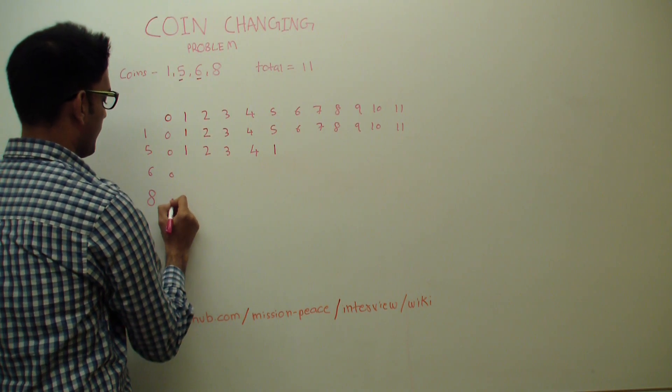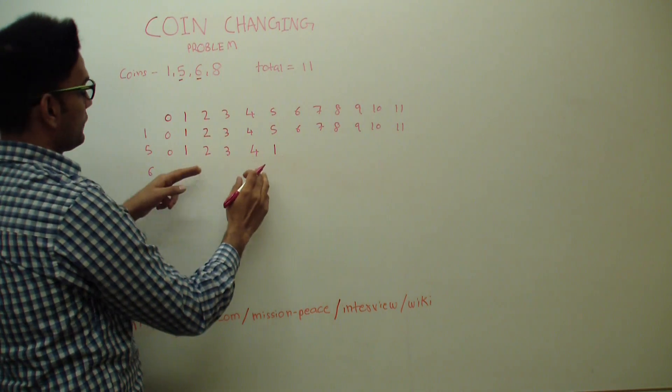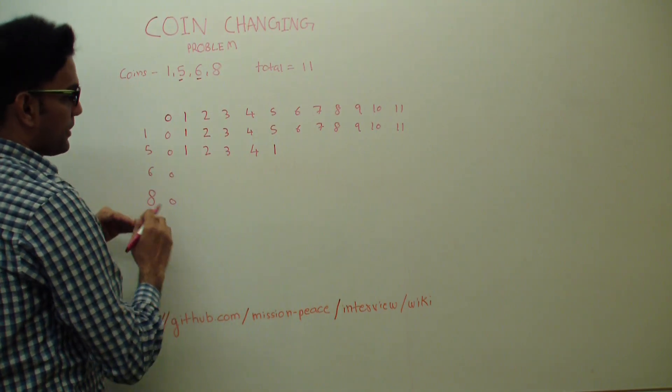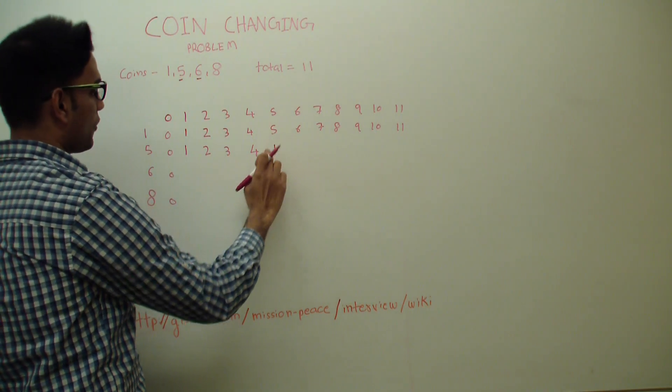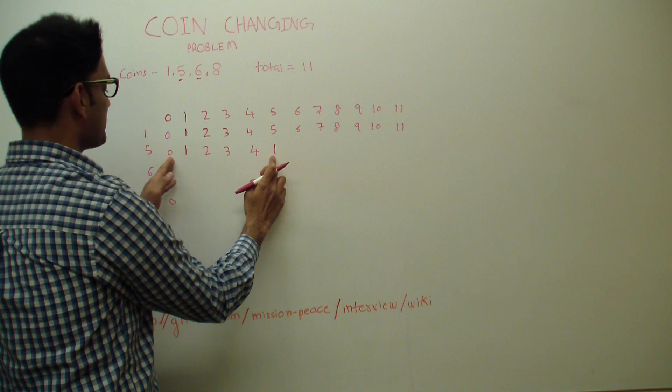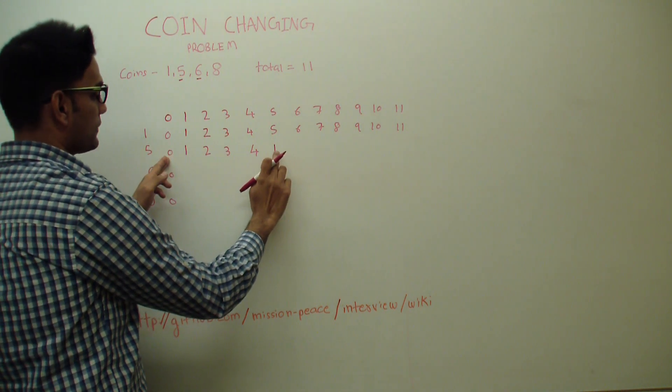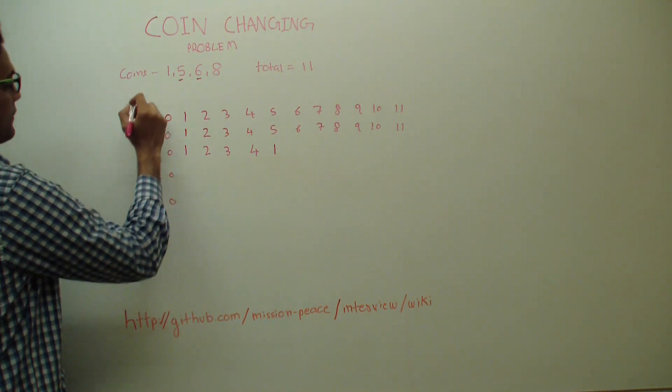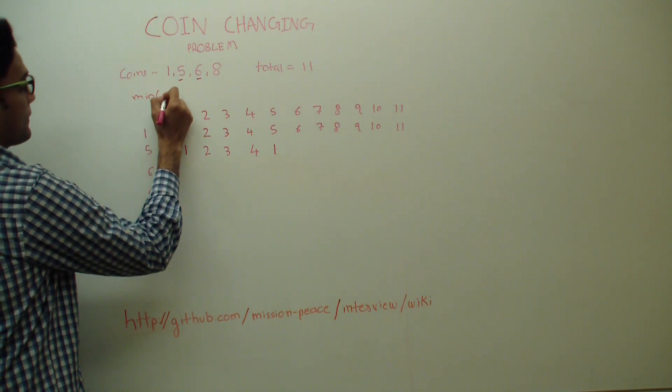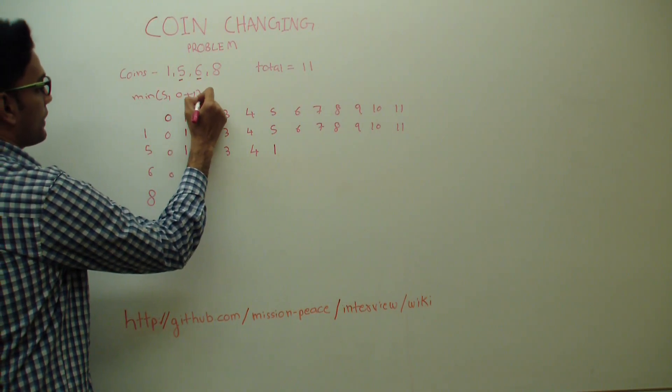So how did this 1 come from? This 1 comes from the minimum of the guy from the top or you go back 5 steps here. So this guy plus 1. So minimum of 5 or 0 plus 1 which is 1.